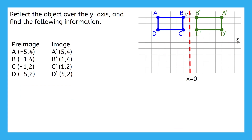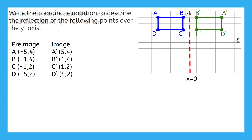Here's another problem that we worked through a few lessons ago. This time, we were reflecting over the y-axis. Go ahead and write the coordinate notation to represent this reflection. Pause the video now and see how far you can get on your own. We always want to start by looking for patterns. It looks like the x value changes signs, but the y value stays exactly as it was in the pre-image. We verify that the same change happens in all the rest of these points.